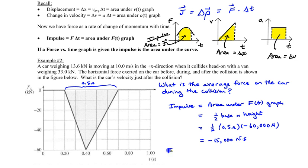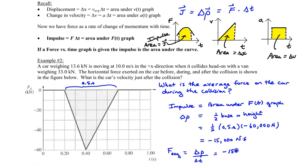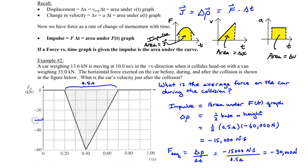We can find the average force by taking the impulse — the change in momentum — and dividing by the time of impact. Because impulse equals force times time. So that's negative 15,000 newton-seconds divided by 0.5 seconds, giving us an average force of negative 30,000 newtons. So negative 30,000 N is the average force, while negative 60,000 N is the maximum force.